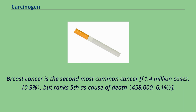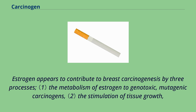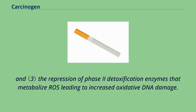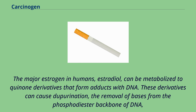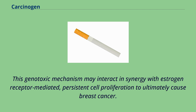Breast cancer is the second most common cancer but ranks fifth as cause of death. Increased risk is associated with persistently elevated blood levels of estrogen, which appears to contribute to breast carcinogenesis by three processes: the metabolism of estrogen to genotoxic, mutagenic carcinogens; the stimulation of tissue growth; and the repression of phase 2 detoxification enzymes that metabolize ROS, leading to increased oxidative DNA damage. The major estrogen in humans, estradiol, can be metabolized to quinone derivatives that form adducts with DNA, causing depurination and inaccurate repair leading to mutation and cancer.